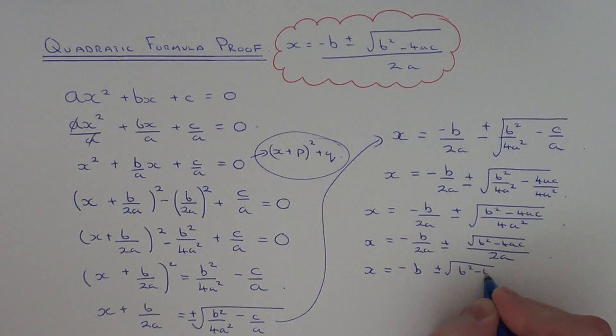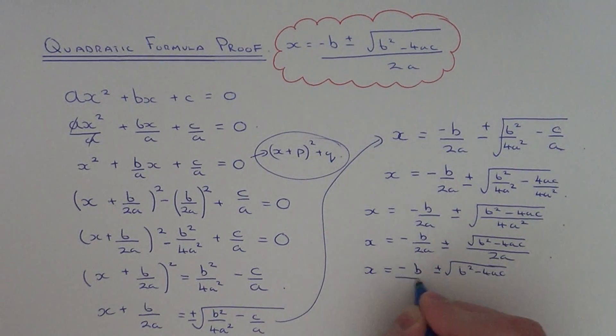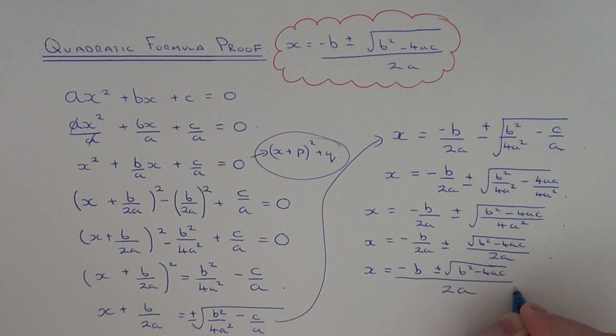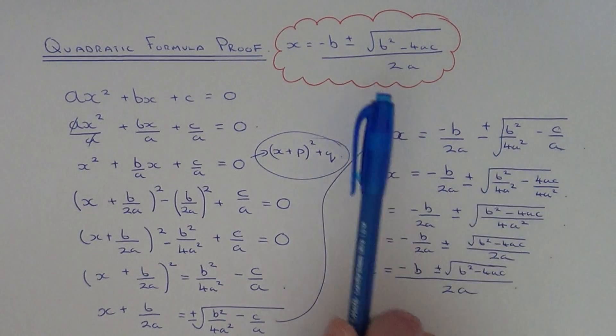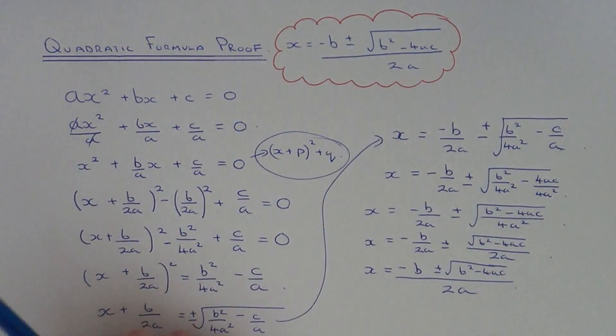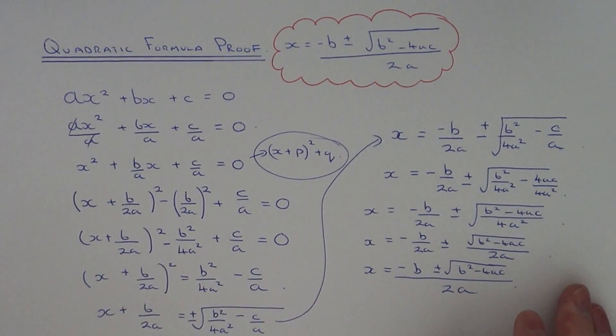As you can see, the denominator is now the same on both fractions, so we can combine them together and we end up with the result we were trying to prove at the top.